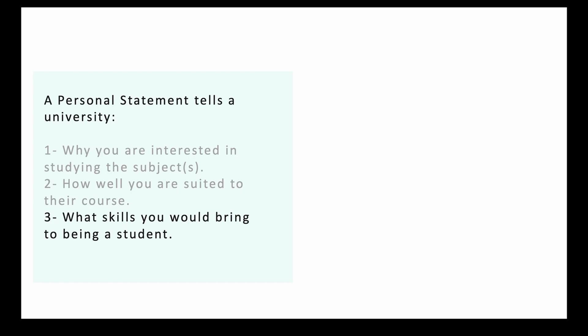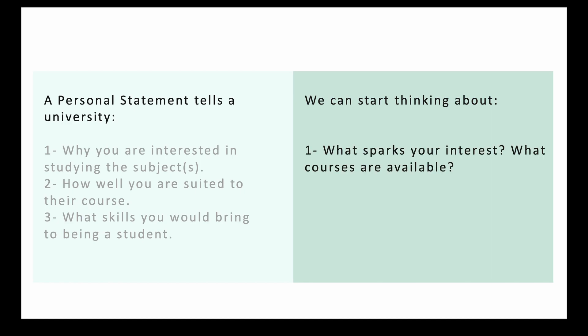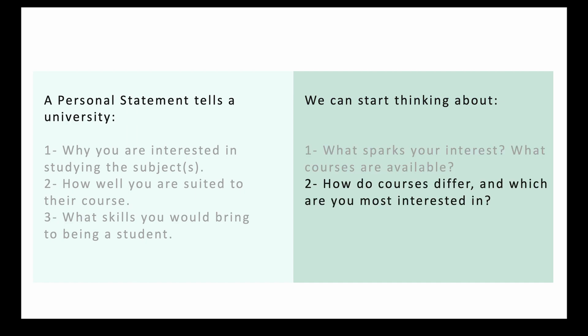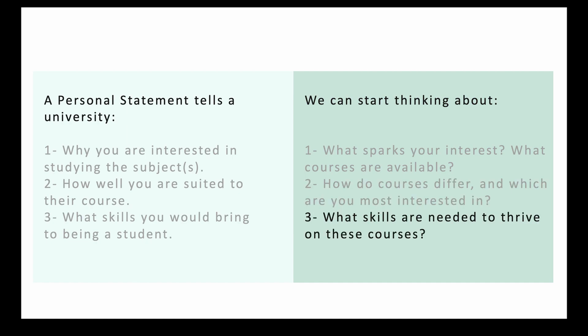To get started in conveying that effectively, we can start to think about a few things. First, universities want to know why you are interested, so we can take the time to focus on what sparks our own interests — this might be whole subjects at school, specific areas of one subject, or maybe even completely new subjects that we don't currently study. We can also look at what universities offer and think about not only which subject, but which courses align with our interests. Secondly, we can look at what students study on these courses, considering specific modules or the format that the learning takes. Finally, we can think about what skills might be useful for that course and reflect on how the things we're doing in and outside of class are developing skills that would be really useful once we start at university.